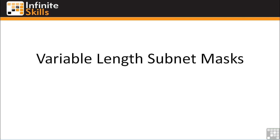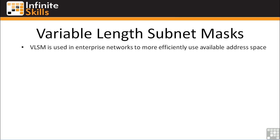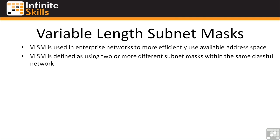Now we're going to talk about variable-length subnet masks. Variable-length subnet masks, or VLSM, is used in large enterprise networks to more efficiently use the available address space. VLSM has a very specific definition — it is defined as using two or more different subnet masks within the same classful network. If you're ever wondering if you're using VLSM, you can just do a 'show IP route' on any router in your network and it'll tell you this network is variably subnetted. You'll see it when we get into the labs here in just a little bit.